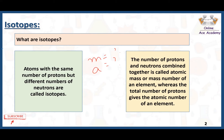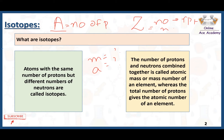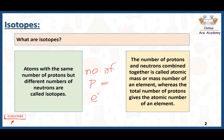Mass number is represented by capital A and atomic number is represented by capital Z. Atomic number means the number of protons, and mass number means the number of protons plus the number of neutrons. As we all know, in an atom the number of protons equals the number of electrons, so the number of protons remains the same. The difference lies in the number of neutrons.